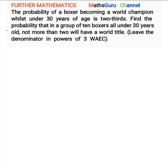Welcome to another session on MassGo's channel. Today we are going to resolve a question taken from a past work question. The probability of a boxer becoming a world champion while under 30 years of age is two-thirds. Find the probability that in a group of 10 boxers all under 30 years old, not more than two will have a world title.